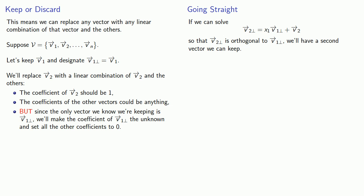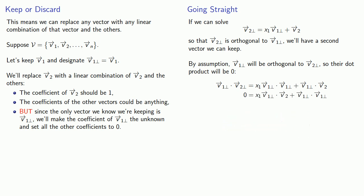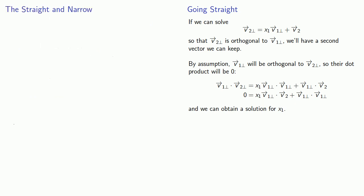By assumption v1 perpendicular is orthogonal to v2 perpendicular, so the dot product is 0. Forming that dot product, the left side is 0, and on the right we have a sequence of dot products we can solve for x1. Now we have two vectors to keep: v1 perpendicular and v2 perpendicular. So we lather, rinse, repeat.